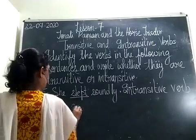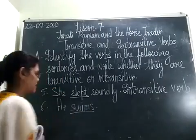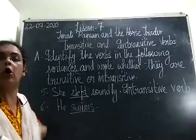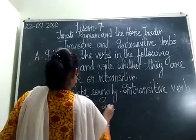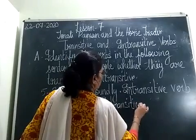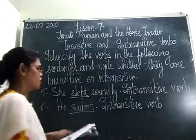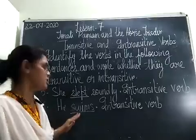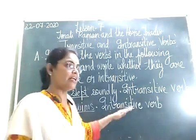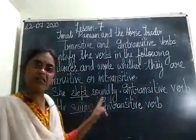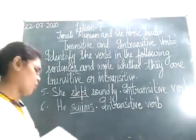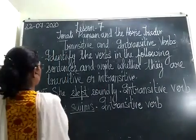The sixth sentence: 'He swims.' 'He' is the subject, 'swims' is the verb. We underline the verb. There is no object after 'swims,' so this is an intransitive verb. Absence of object is intransitive, presence of object is transitive. He swims — no object — so intransitive verb.